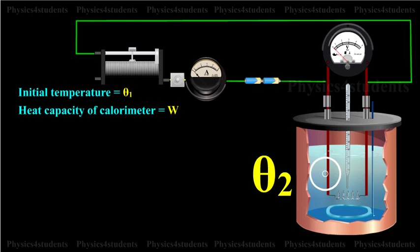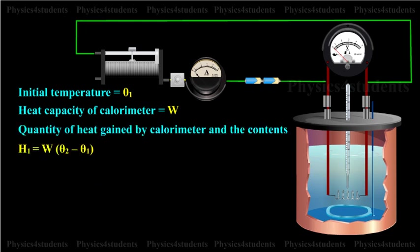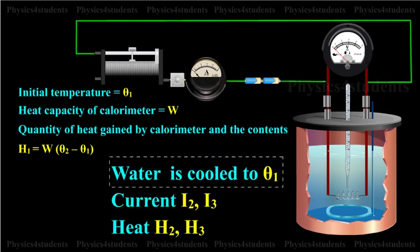The final temperature, theta 2, after applying necessary correction, is noted. The quantity of the heat gained by calorimeter and the contents is calculated as H1 equals W into theta 2 minus theta 1. Water is then cooled to theta 1.